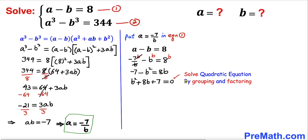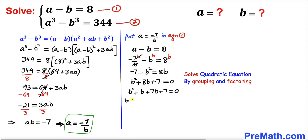Moving everything to the right hand side gives us b squared plus 8b plus 7 equals 0. This is a quadratic equation and we are going to solve it by grouping and factoring. We can write 8b as 1b plus 7b. Between the first two terms b is common, and between the last two terms 7 is common, so we factor out b to get b plus 1, and factor out 7 to get b plus 1 as well.